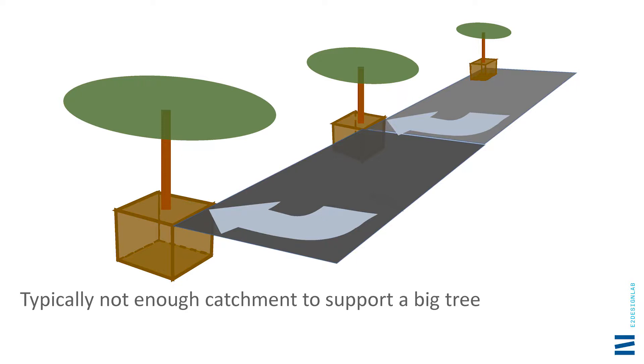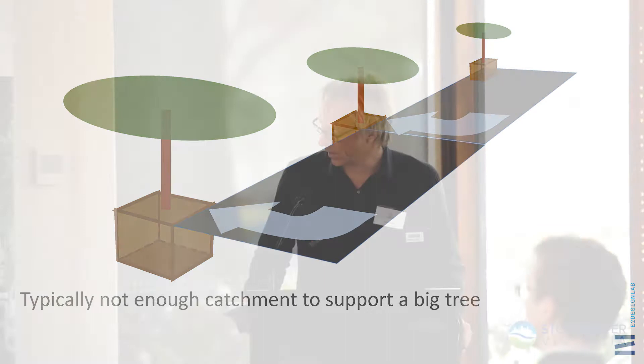Even if that ratio is a bit out, the following story still holds true. The trouble is you're just not going to get a catchment as big as that when you're chasing the canopy cover targets that make a street work well. For instance, with trees spaced at about 15 metres and pavement from crown to kerb at three and a half metres wide, you've only got about 100 square metres of pavement — which will only support ideal conditions for a tree grown to about three and a half metres in diameter. That's not really big enough.